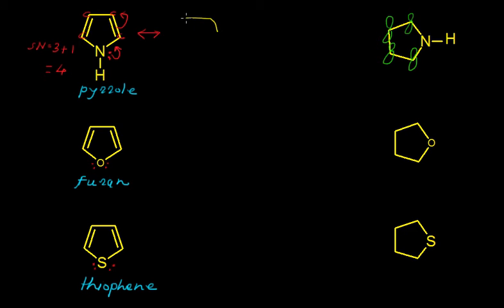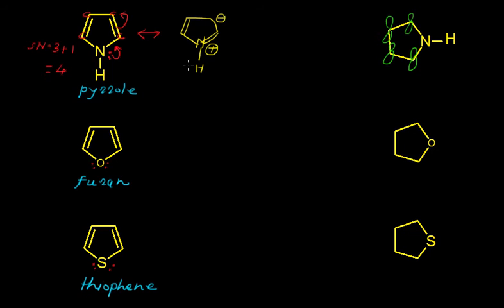Let me draw the resonance structure. We have nitrogen, and we must write a double bond between this carbon and the nitrogen, with a negative charge on this carbon. The existing double bond remains as it is. We have a bond with hydrogen, and we must write a formal positive charge on this nitrogen.